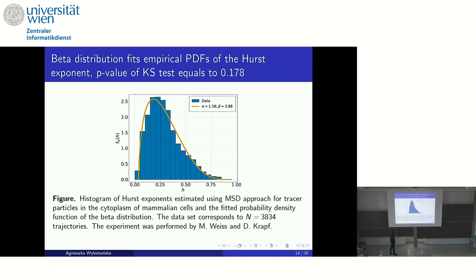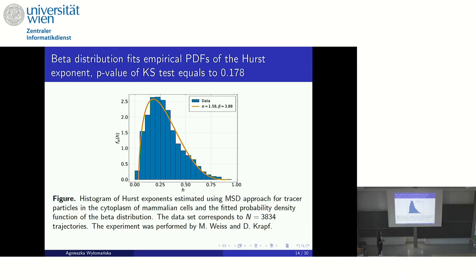The second dataset came from experiments by Professor Weiss and Professor Kraft, who is also here. Here we had many more trajectories, though they were not very long — about 100 data points each. For each trajectory we estimated the parameter using the MSD approach, plotted the histogram, and fitted the beta distribution. The parameters are a little different. The Kolmogorov-Smirnov test again does not reject the hypothesis, confirming it is reasonable to analyze this distribution for this new process.